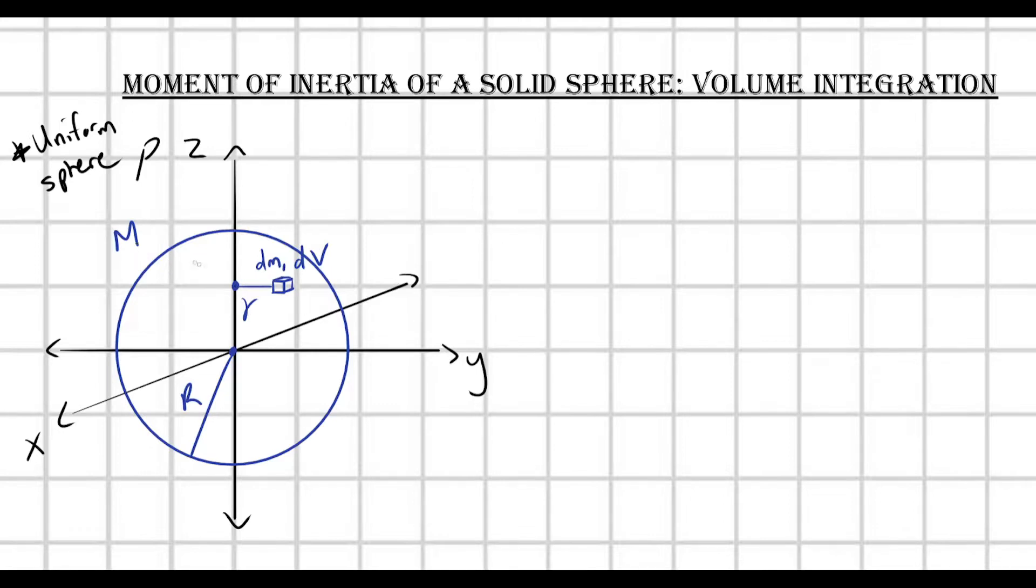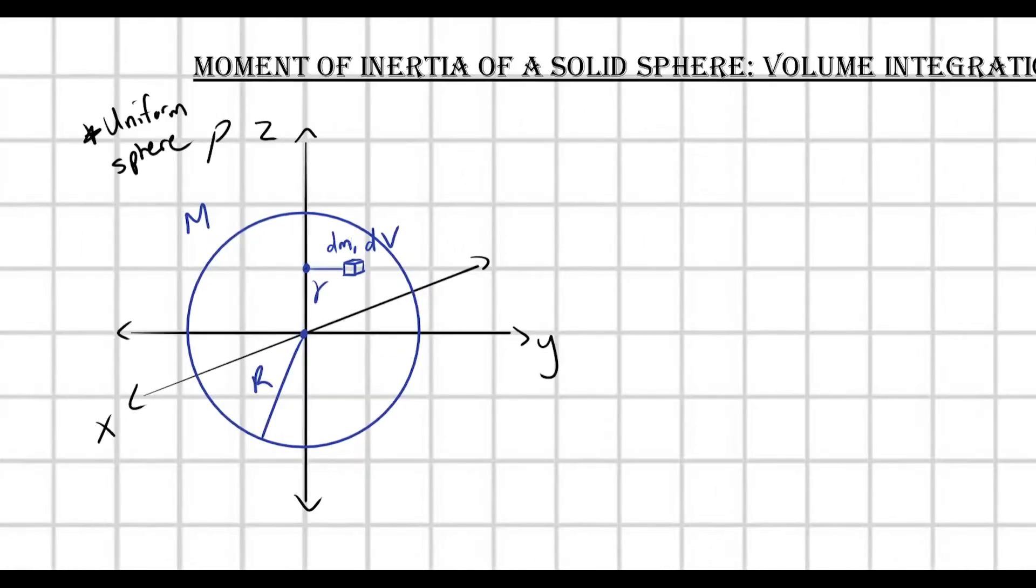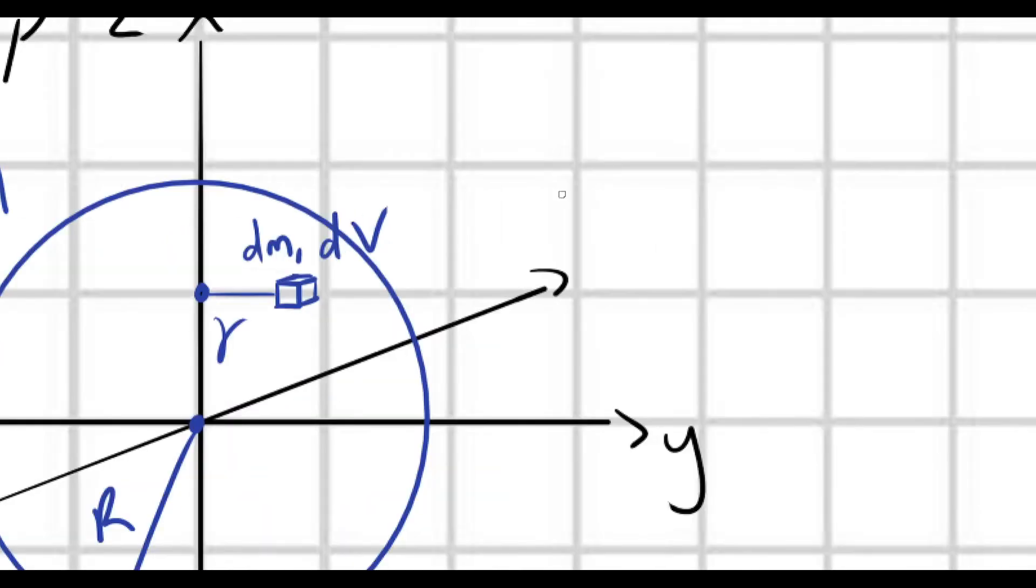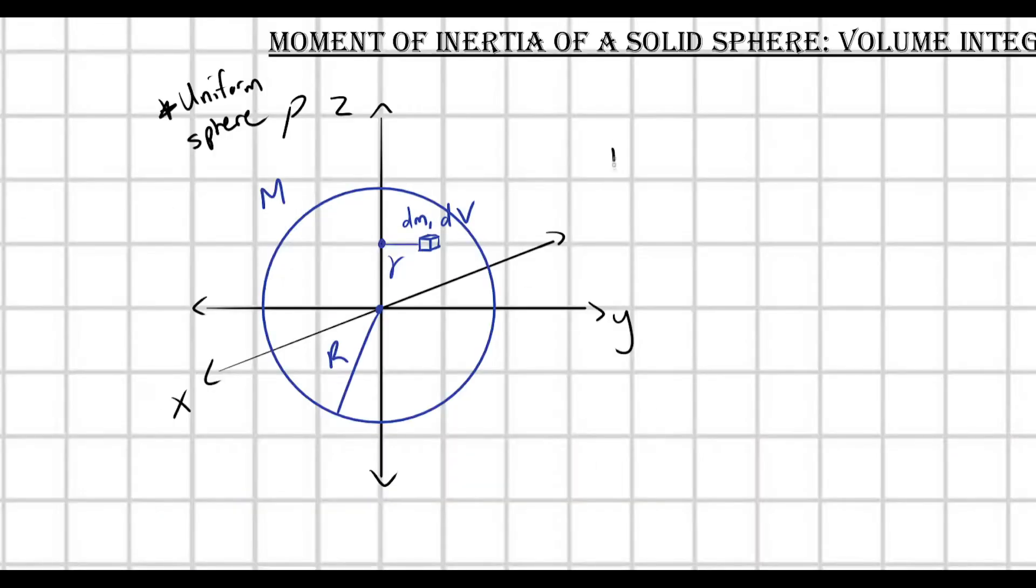So I've already labeled one of my mass elements here. It has some little mass dm, and it occupies some infinitesimal volume dV. And so I know that my moment of inertia I is defined as the integral over my sphere of gamma squared dm.